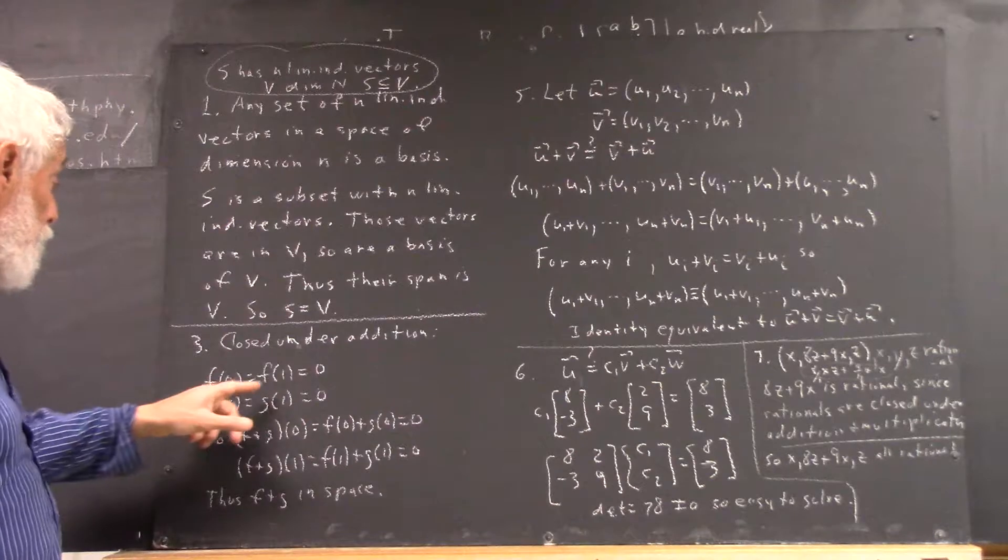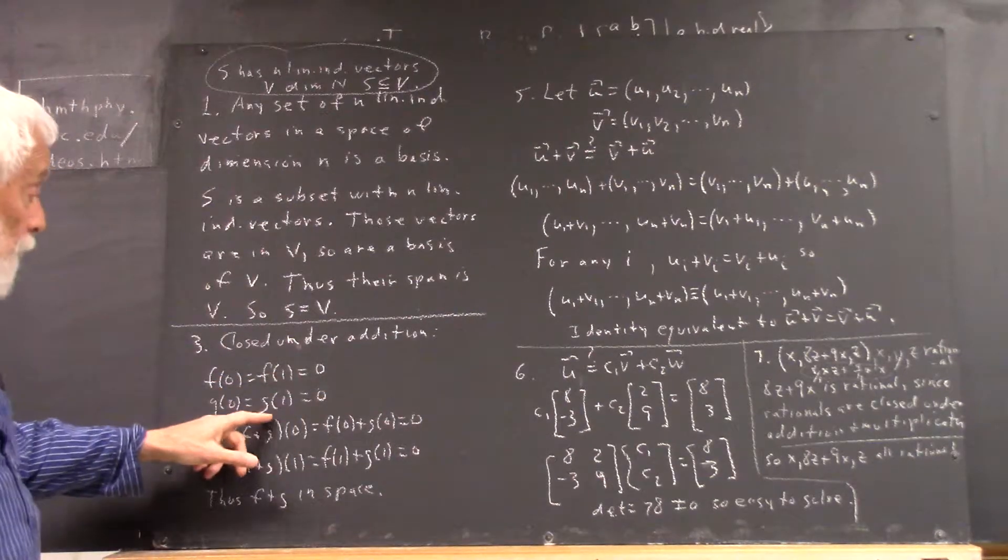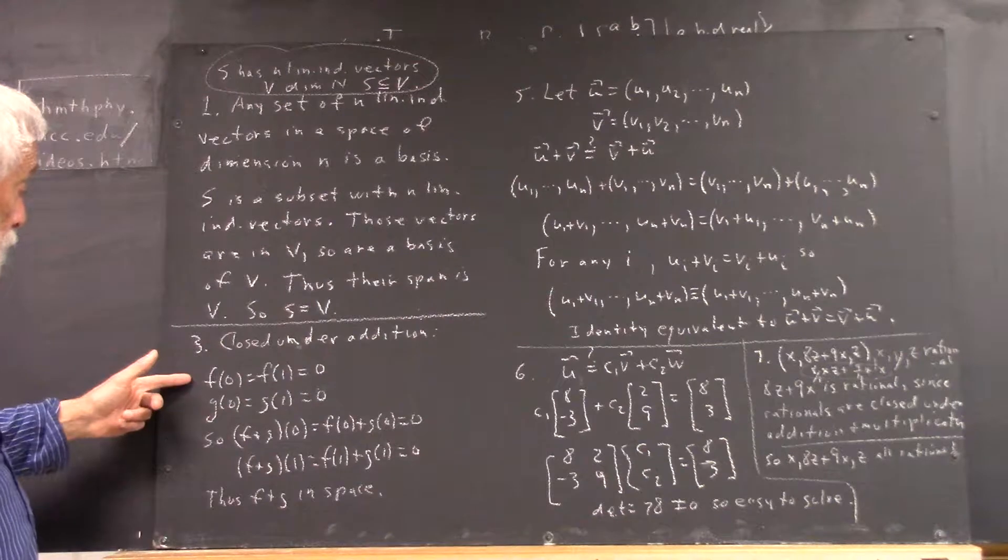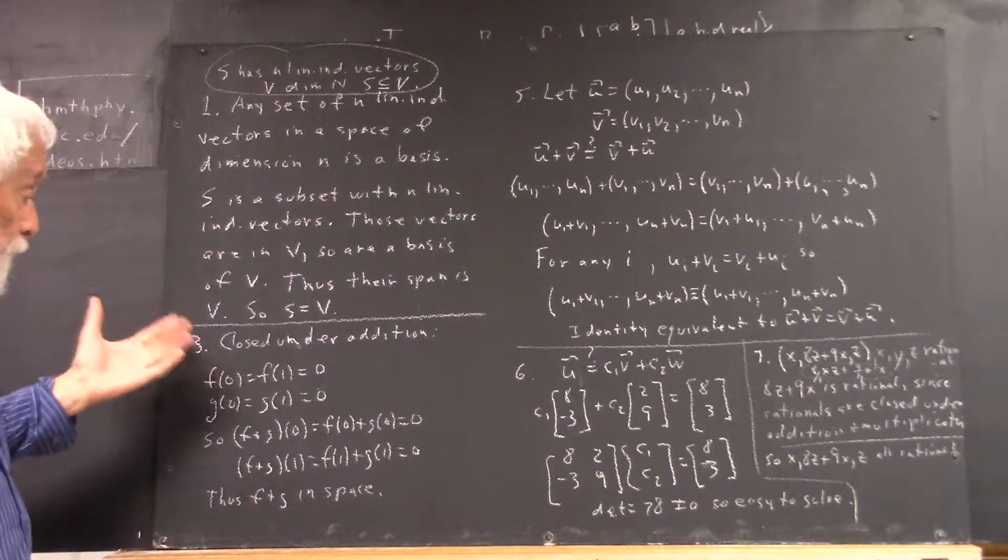So we write that down as f of 0 equals f of 1 equals 0, g of 0 equals g of 1 equals 0. So now f and g represent two functions that have that property.